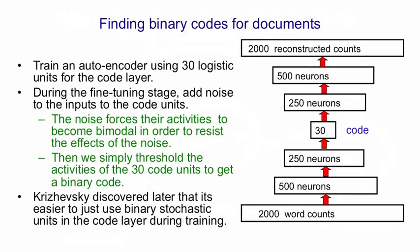Once we've got these short binary codes, we could do a sequential search, where for each known document, we store a code. And then when a query document arrives, we first extract its code if it's not one of our known documents, and then we compare the code with the codes of all the stored documents. The comparisons can be very fast, because they can use special bit operations on a typical CPU, which can compare many bits in parallel. But we have to go through a very long list of documents — possibly billions.